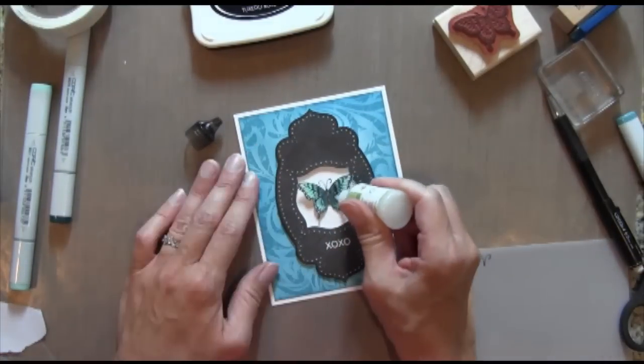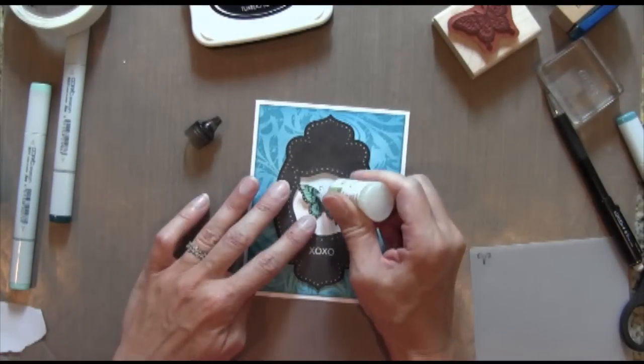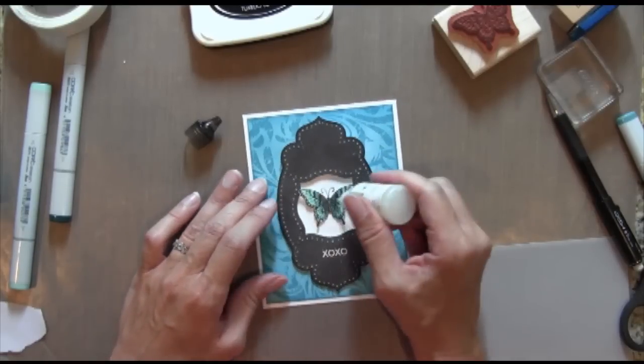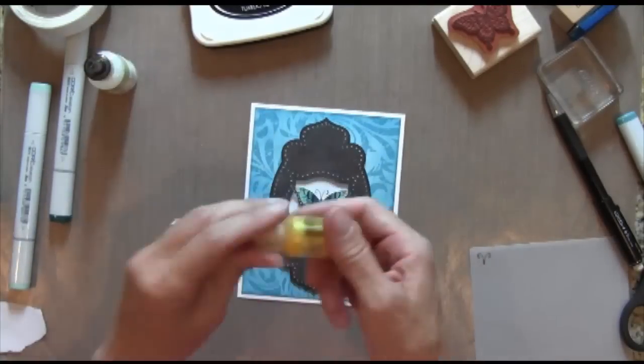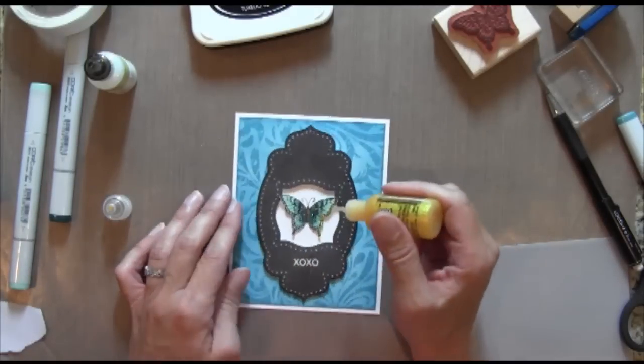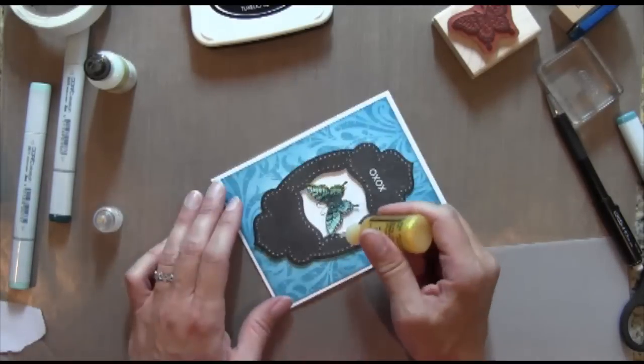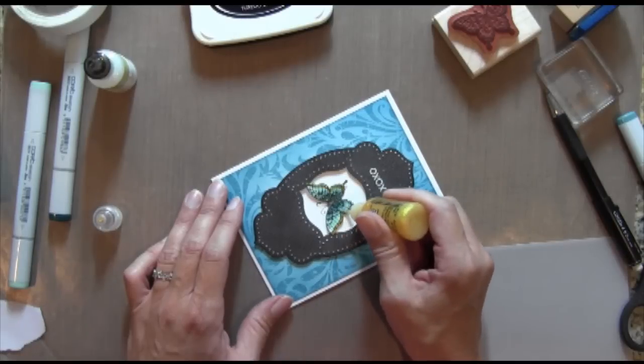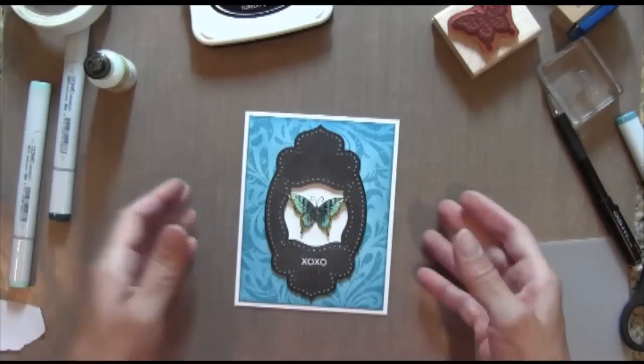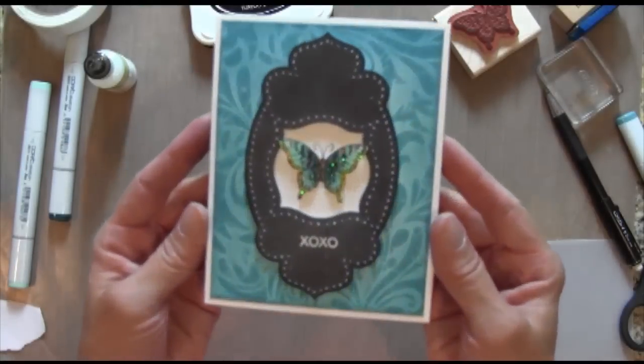Finally, I'm going to add some dazzling details. It's like a clear stickles with sparkles in it by Stampin' Up. And I'm going to just use a very light layer and I'm going to really put it more toward the center of the butterfly and kind of fade it out as it gets toward the outside. And these are yellow stickles and I'm just outlining the edges.